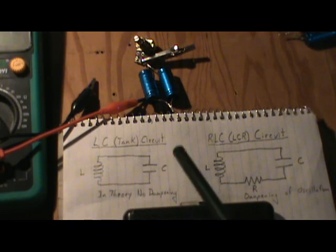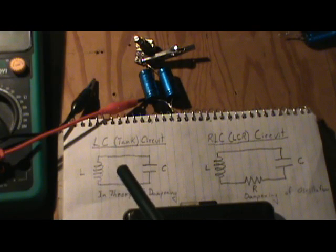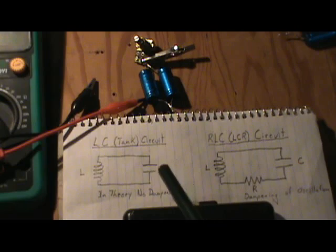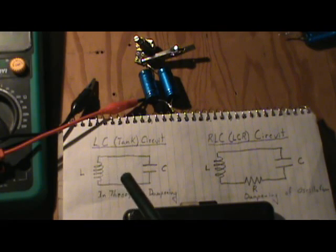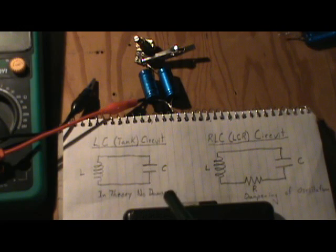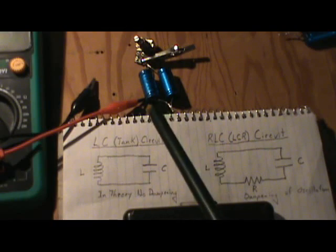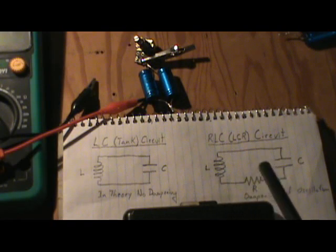The energy oscillates back and forth from the inductor to the capacitor. In theory this oscillation could go on forever with no resistance, but we know there's inherent resistance. In theory without any internal resistance in this inductor, this would oscillate forever. That's what the textbooks teach in theory.